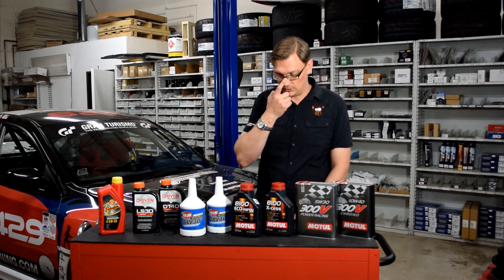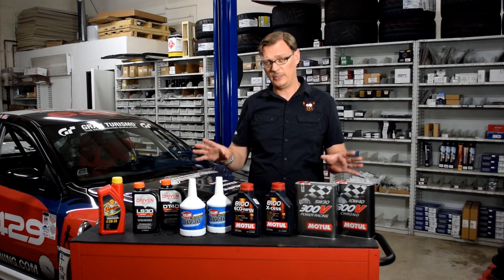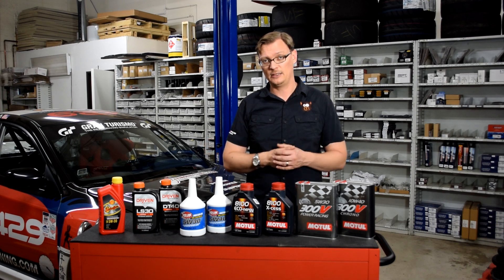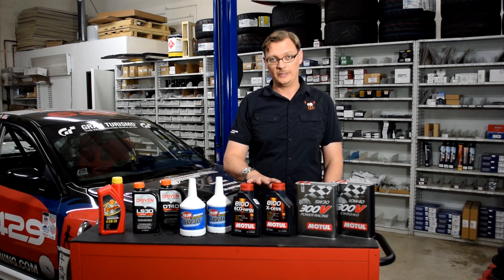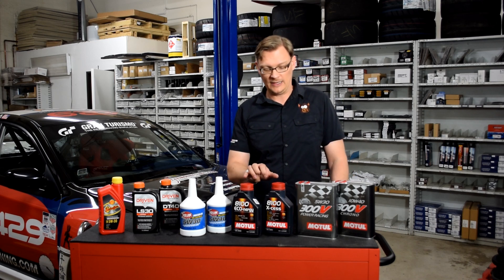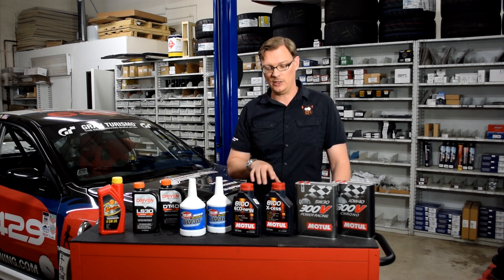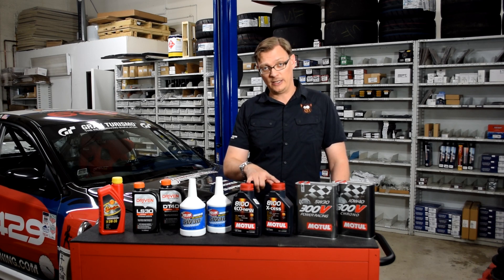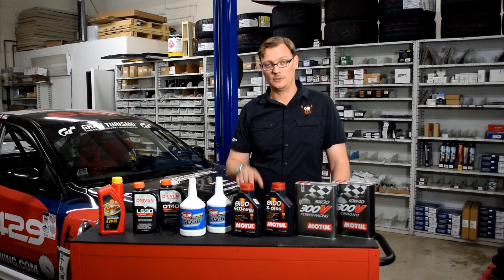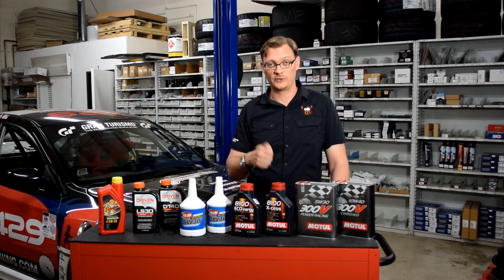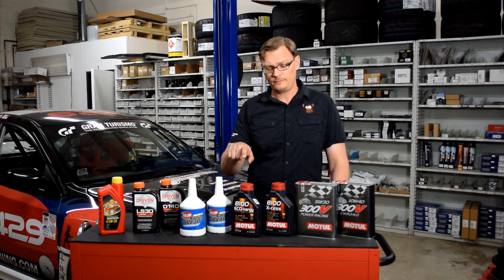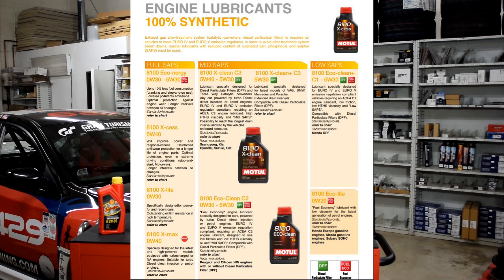And then we have Motul. Motul is an interesting one — as of all the manufacturers here, they're probably the biggest oil manufacturer, and they have a couple of different offerings. In their 8100 group, it was really fascinating to delve down into what's going on with that. They have a lot of different blends. When you're talking about zinc and phosphorus, Motul refers to it as SAPS — sulfuric ash, sulfur, and phosphorus. They have full SAPS, mid SAPS, and low SAPS blends all in the 8100 group.